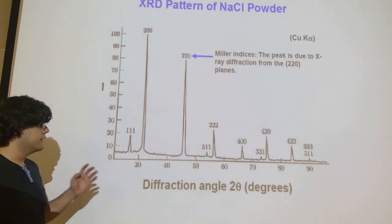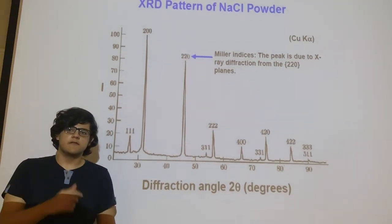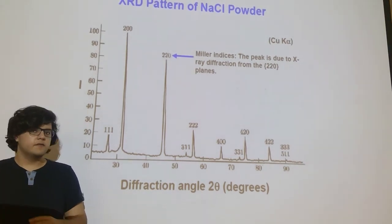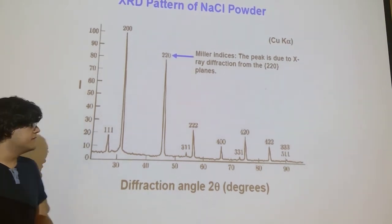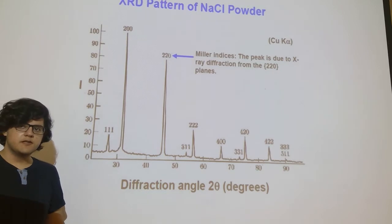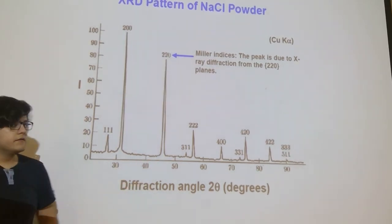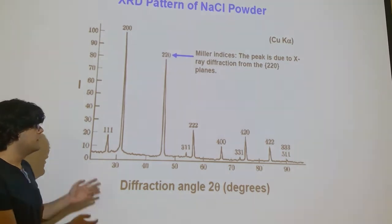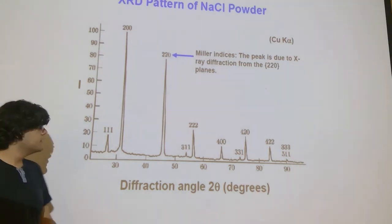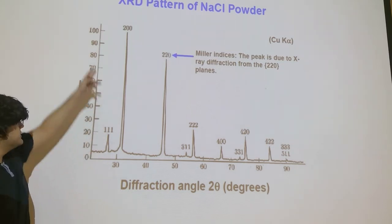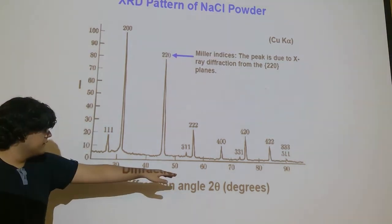Because all materials are different, they have different crystal planes, and because they have different crystal planes, they will have different diffraction peaks, which means they will have different graphs for crystal diffraction. This kind of graph indicates the intensity versus the angle of diffraction.